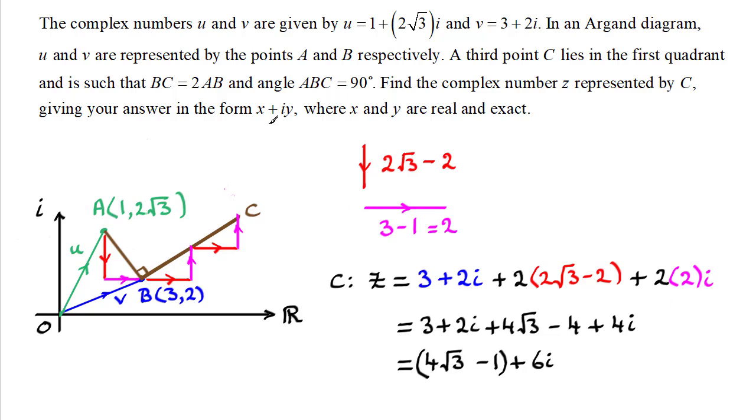So it is in this form x plus i y. We can see that the real part x is four root three minus one, and the imaginary part y is just the six.